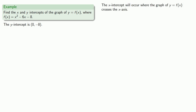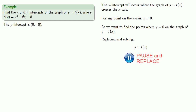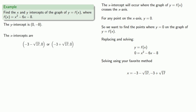The x-intercept will occur where the graph of y equals f of x crosses the x-axis. Remember that for any point on the x-axis, y is equal to zero. So we want to find the points where y equals zero on the graph. Equals means replaceable, so we'll replace and solve, which gives us our x-coordinates. Remember, that's just half a point — we need to include the y-coordinates to have the full x-intercepts. And so our x-intercepts will be those points.